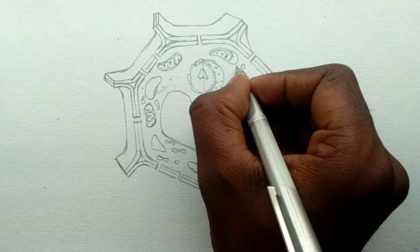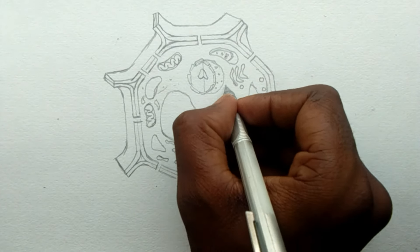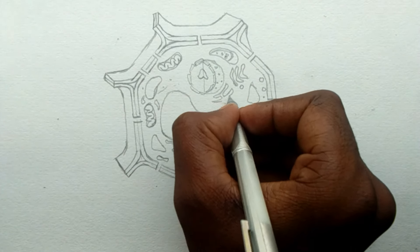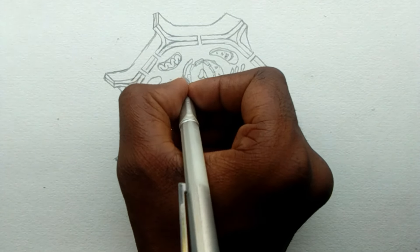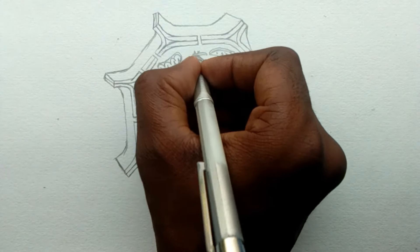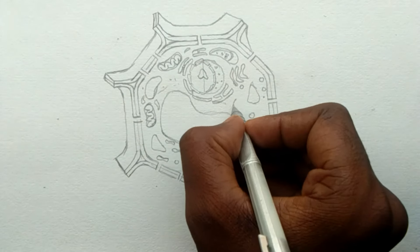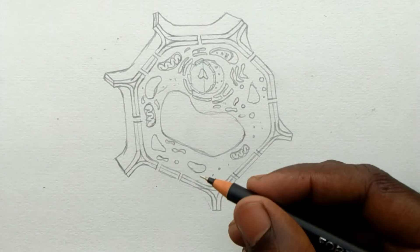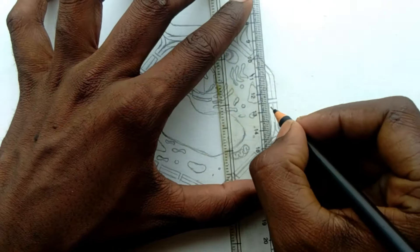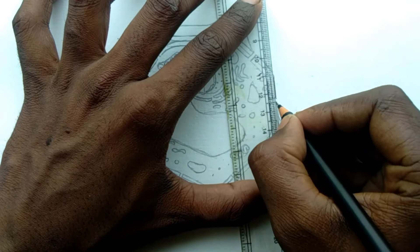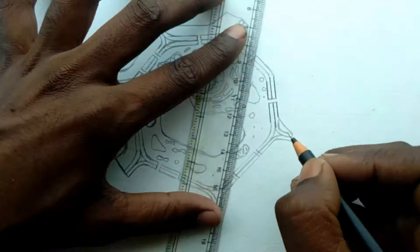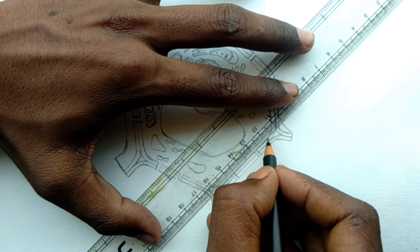If you are drawing this diagram for examination purposes, then you don't need to color it. You should only draw it with your pencil and mark all the parts correctly. Now as I am drawing this diagram, I'm also giving the idea for project work, so I am using a black pen.